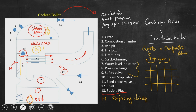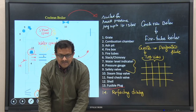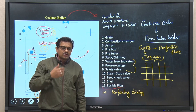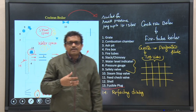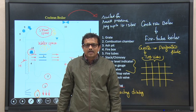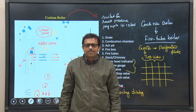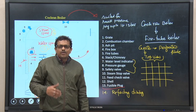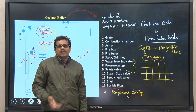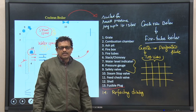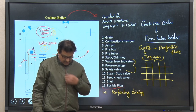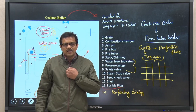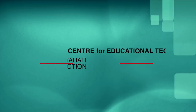To summarize today's class: we discussed the operation of the Cochran boiler, identified its disadvantages in the context of the steam power cycle, and discussed the objectives of all components present in this type of boiler. With this, we stop here today and shall continue our discussion in the next class. Thank you.